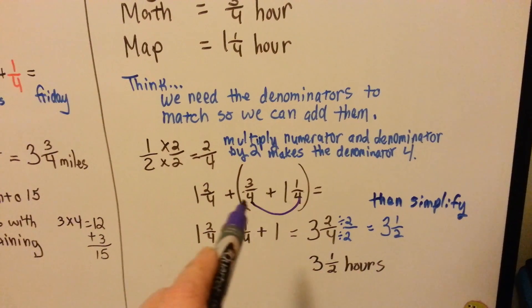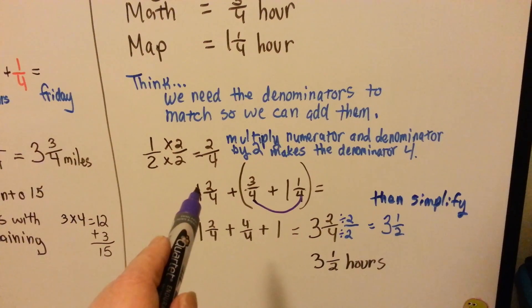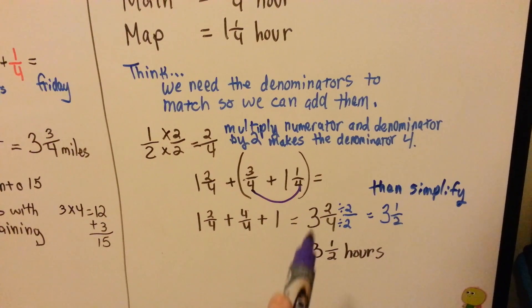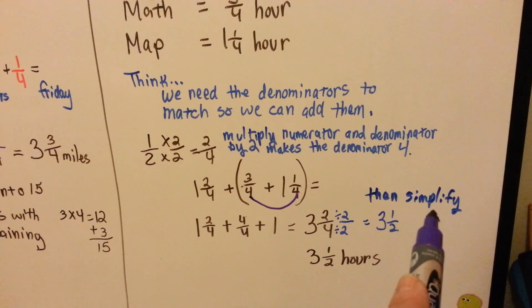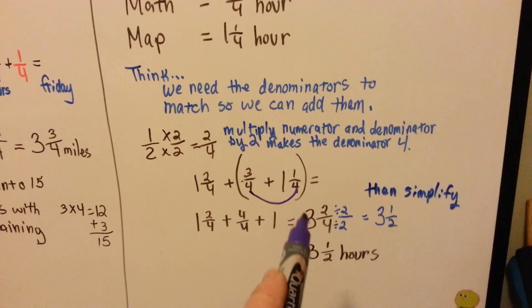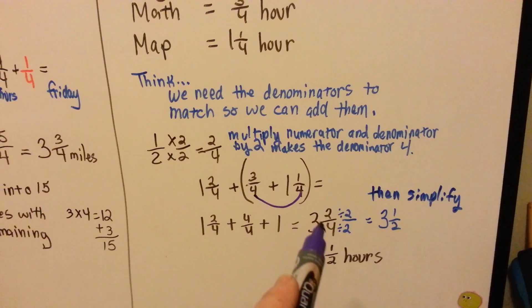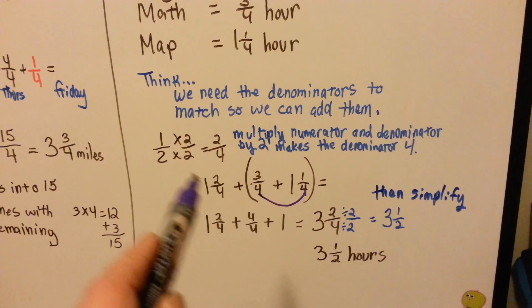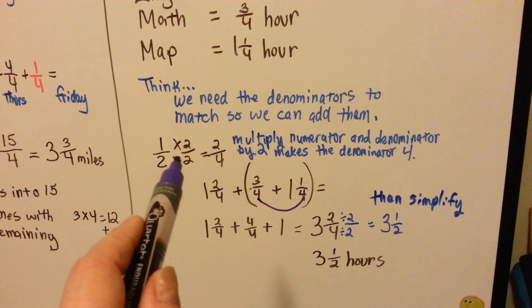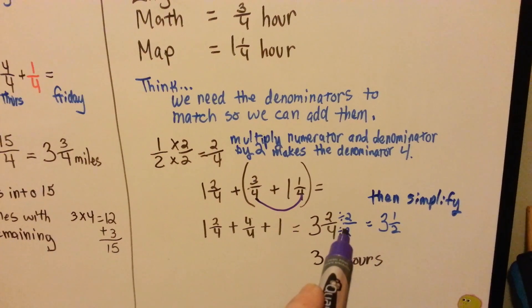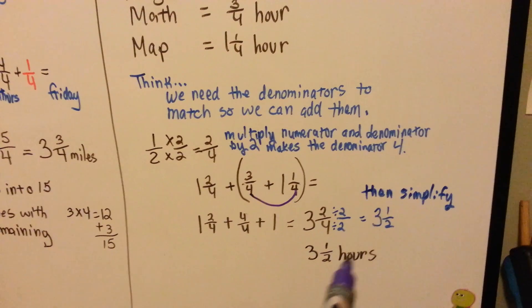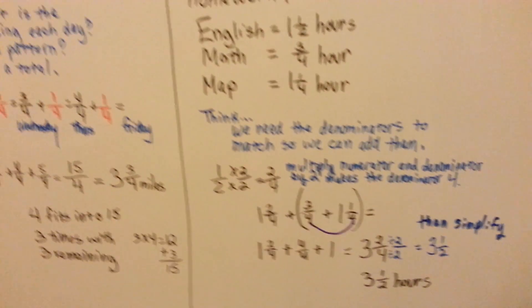Now we can even do mental math to add 2 plus 1 and 2 fourths would be 3 and 2 fourths, but we're not done yet. We need to simplify, because if you turn this in, it would be marked wrong, or maybe half wrong, because you forgot to simplify. We need to turn this 2 fourths back into a half and simplify it. So we do the opposite of multiplication, and we divide. Divide 2 by 2 is 1. Divide 4 by 2 is 2. And we get 3 and a half hours of homework.